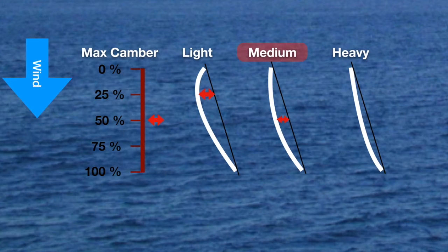As the wind increases further and we get into the heavier airs, you once again want to move the max camber aft by flattening out the sail, with 75 percent from the front of the sail being a good guide for your heavy weather starting point.